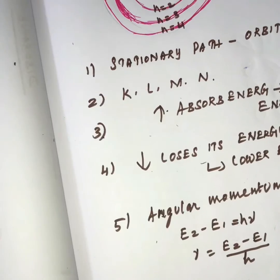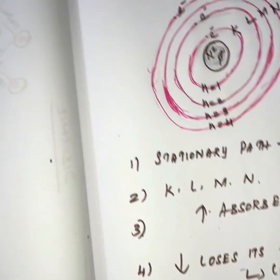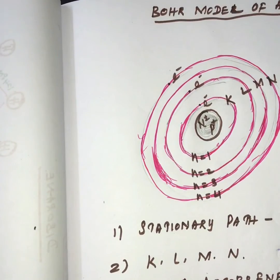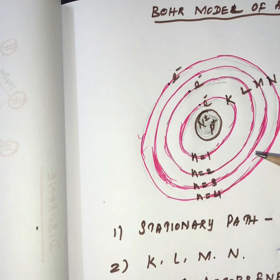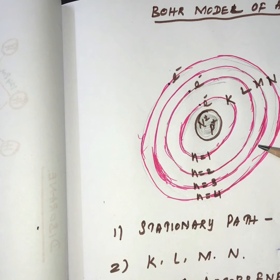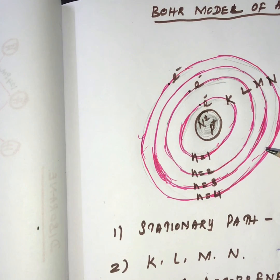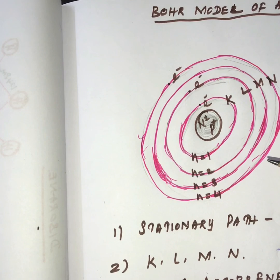This is the Bohr model of an atom. According to the Bohr model, an electron circulates in a path called an orbit or energy level, and each electron in a particular orbit is associated with that energy level, moving continuously in it. The quantum of energy absorption and emission is calculated in terms of the angular momentum of the electron.